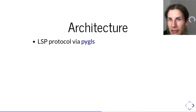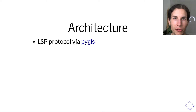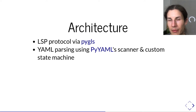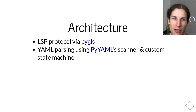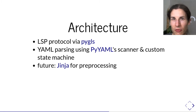For the language server protocol itself, we leveraged the PyGLS library, which allows us to really focus on just providing the data while PyGLS takes care of all the actual protocol communication. We then use PyYAML for YAML parsing. Initially we used PyYAML's YAML parser, then we briefly switched to RUAMEL since it provided more features, and then switched back to PyYAML. Now we just use its scanner and have a custom state machine that Cedric implemented, so that we can parse broken YAML — which is quite important when the user is currently typing. In the future we'd also like to use Jinja2 for Jinja templating, but we're not there yet.